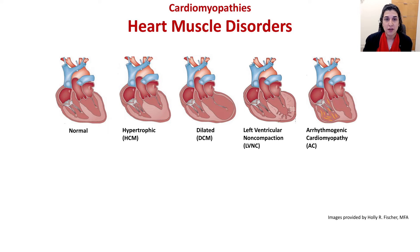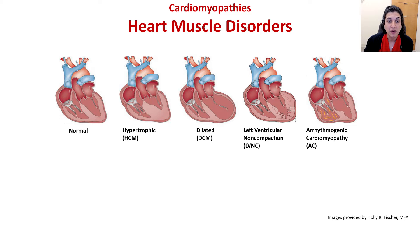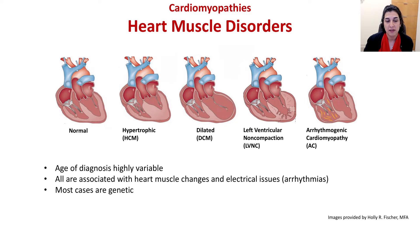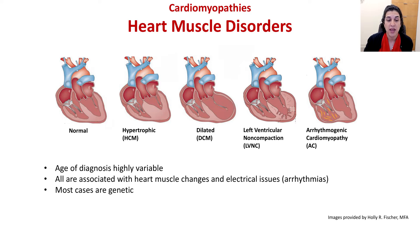Cardiomyopathies are a general class of heart muscle disorders. Here I'm showing you pictures of what the heart can look like, with the leftmost picture being a depiction of the structurally normal heart. Cardiomyopathies are very highly variable in diagnosis age. They're all associated with heart muscle changes and electrical conduction abnormalities or arrhythmias, and most are genetic.